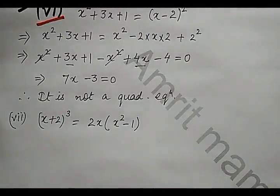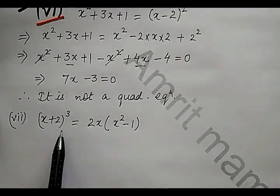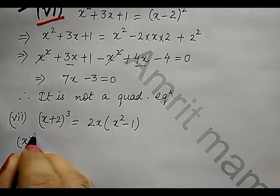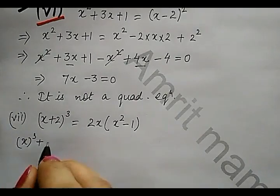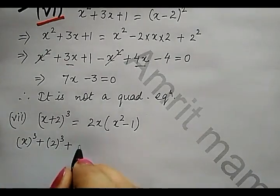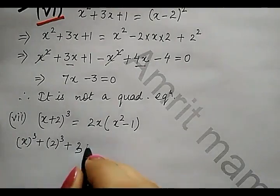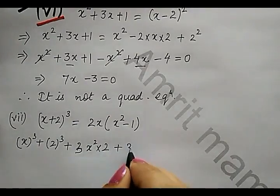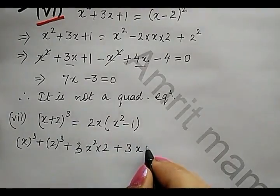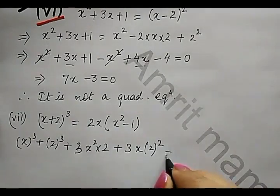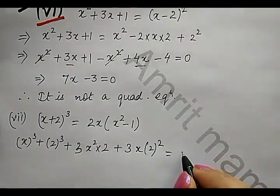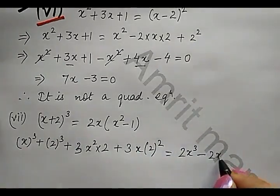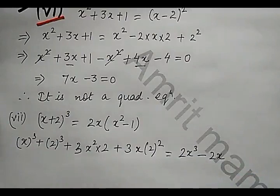Now on the left hand side what we have? It is a plus b whole cube which equals a cube plus b cube plus 3 a square b plus 3 a b square, which equals 2x into x squared that is 2x cube minus 2x into 1 that is 2x. Now let us simplify this.